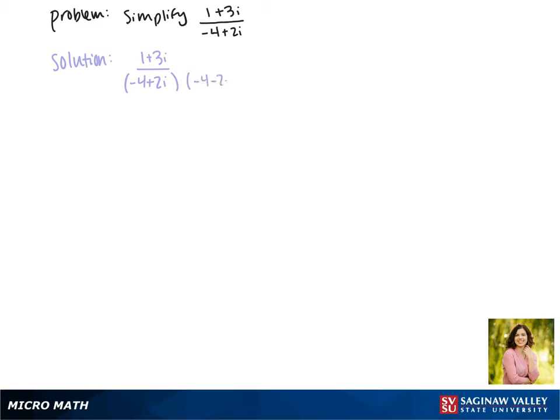Now the conjugate has an opposite value for the imaginary part, so instead of it being a positive 2i, it's now a negative 2i. Whatever we do to the bottom we also have to do to the top, and now we can multiply all of this out.